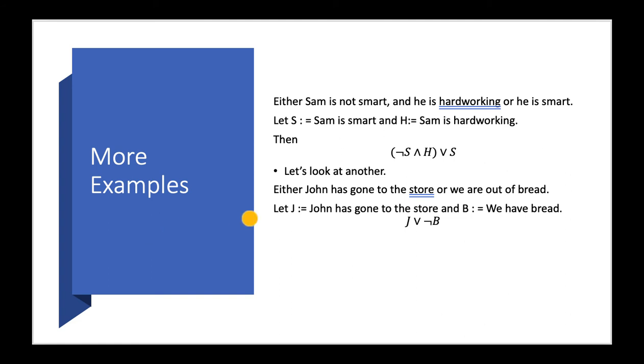Let's look at another case. Either John has gone to the store or we are out of bread. So, if we let J be John has gone to the store and B, we have bread, then we use the negation symbol to say that John has gone to the store or we do not have bread.